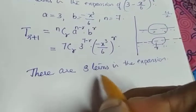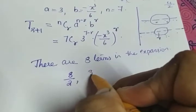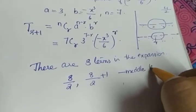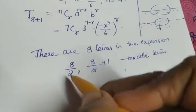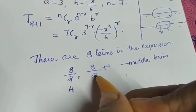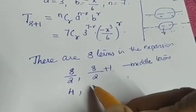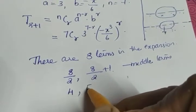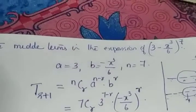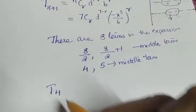Here in this case also there are 8 terms. So the middle ones will be at position 8 by 2 and 8 by 2 plus 1. That means 8 by 2 is 4, and 4 plus 1 gives you 5. So the middle terms are the 4th term and the 5th term, and the question is to find both. That means we have to find T4 and also T5.